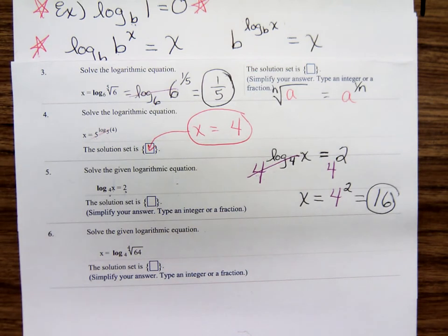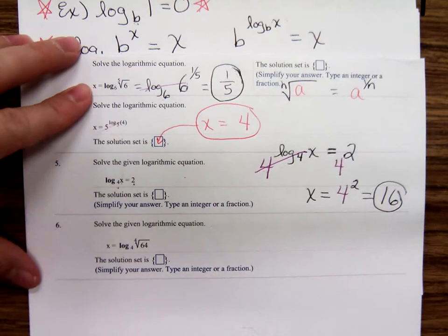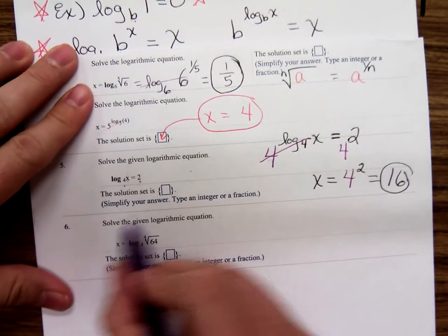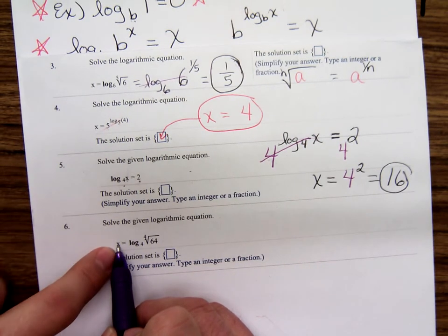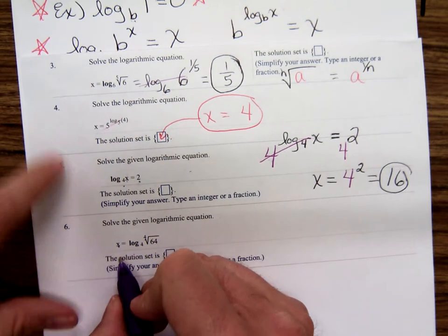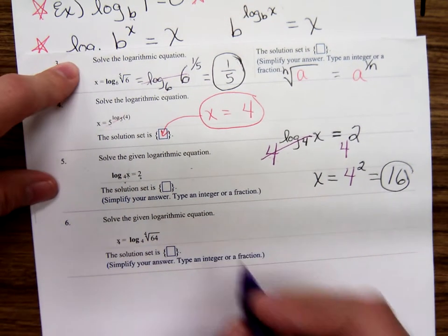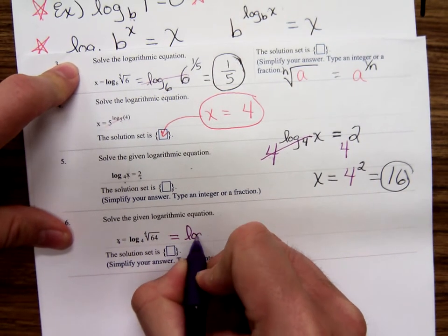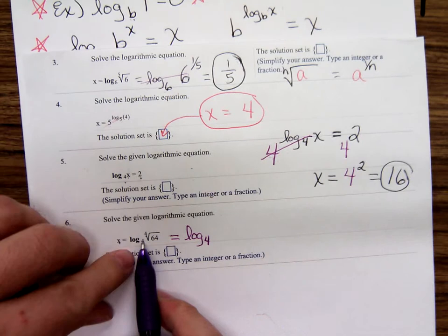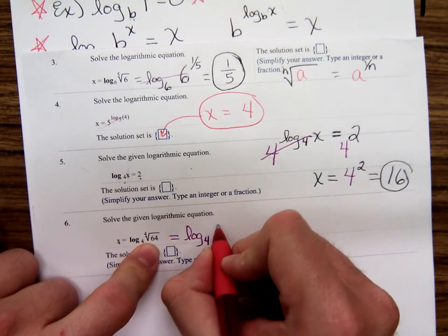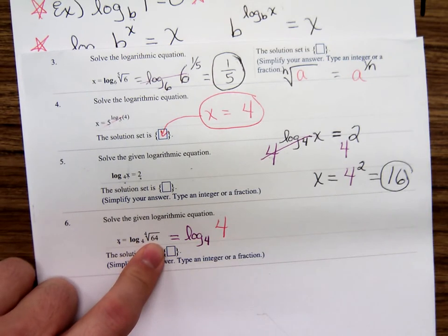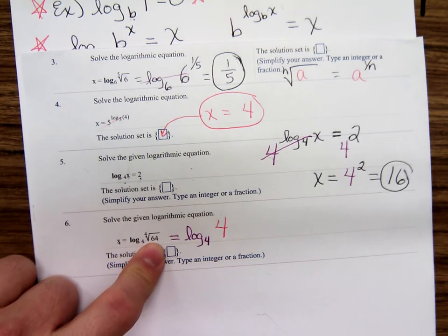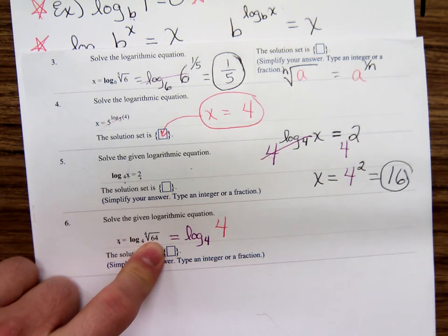Now, problem number 6. It's not like 5. It's more like 3 and 4 because x is by itself again. So, I'm going to do number 6 the way I did number 3. We have log base 4. Now, the 64, I need to write with a big 4. How many 4s do I need to multiply together to get a 64? Well, I'm thinking it's 4 cubed. 4 times 4 is 16, times one more 4 is 64.